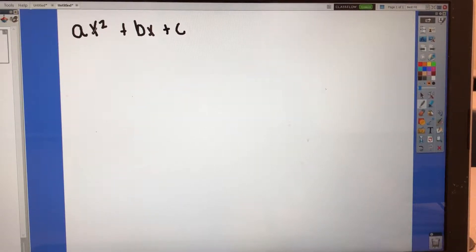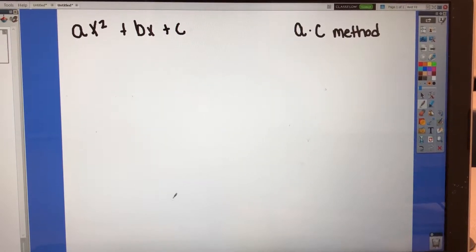Now we're going to look at factoring an ax squared plus bx plus c trinomial. We have two different commonly used methods that can be used for this. So I'm going to first do the ac method. So this is the ac method, or it can also be called the diamond or the cross method.